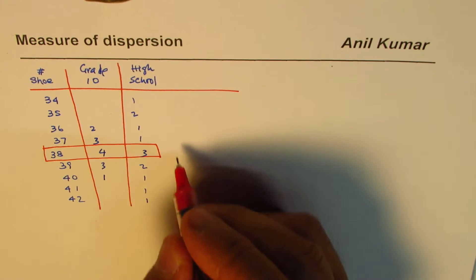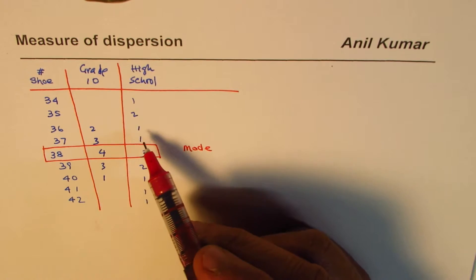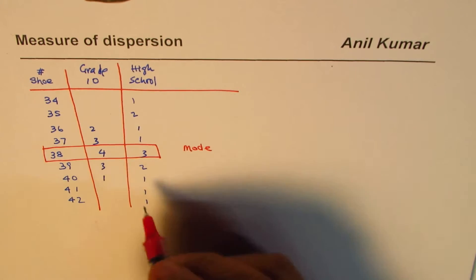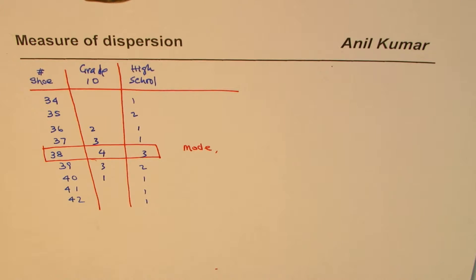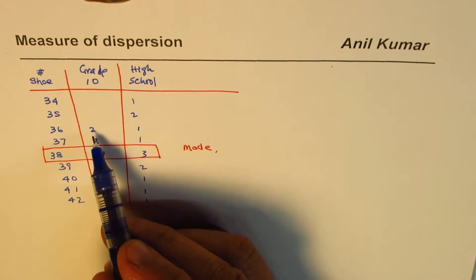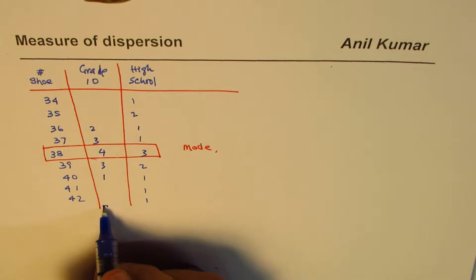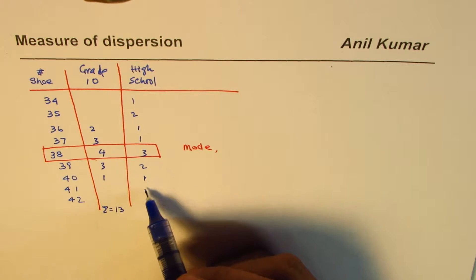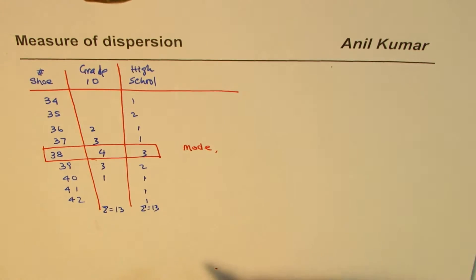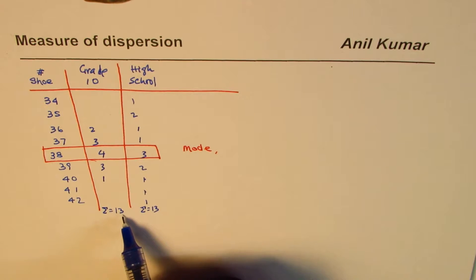As you can observe, both datasets have most students at size 38, meaning the mode is the same. If we calculate the mean, we may get the same shoe size as well. The median may also be the same. In both cases the total number of students is 13, so the center position is at 6.5.